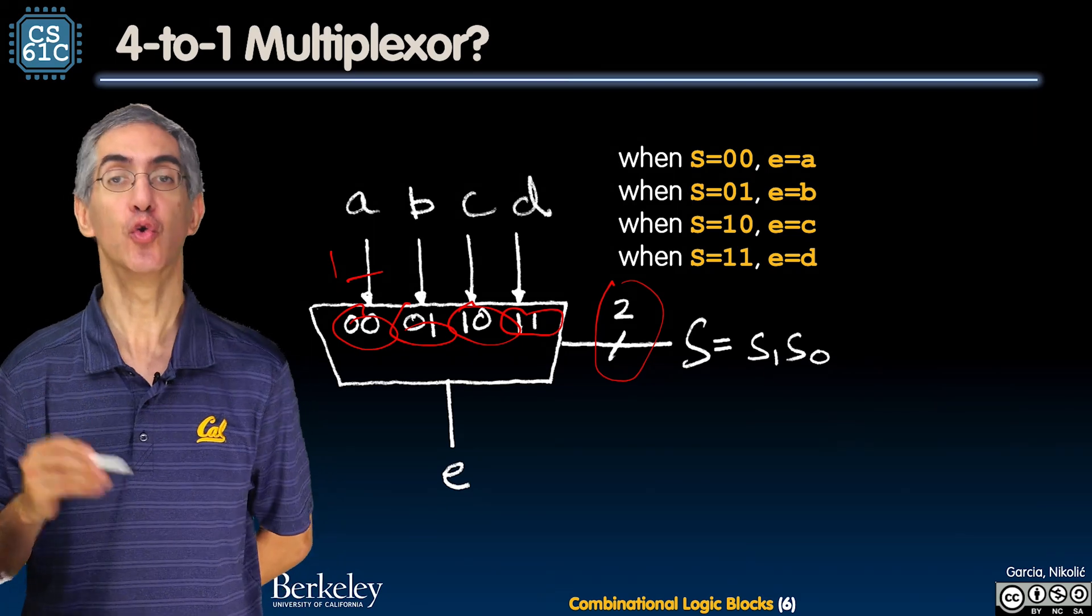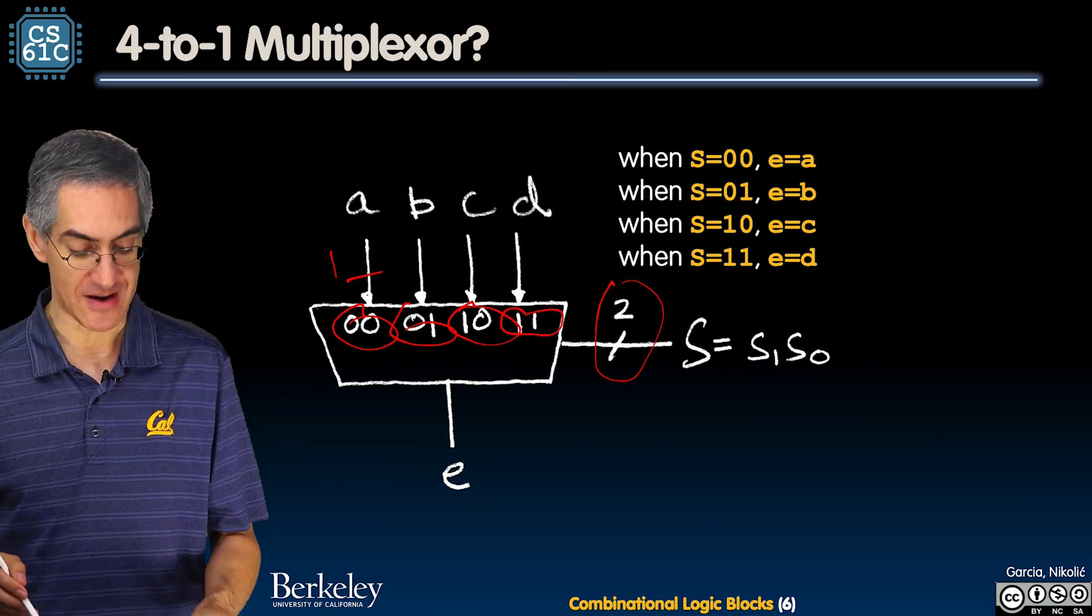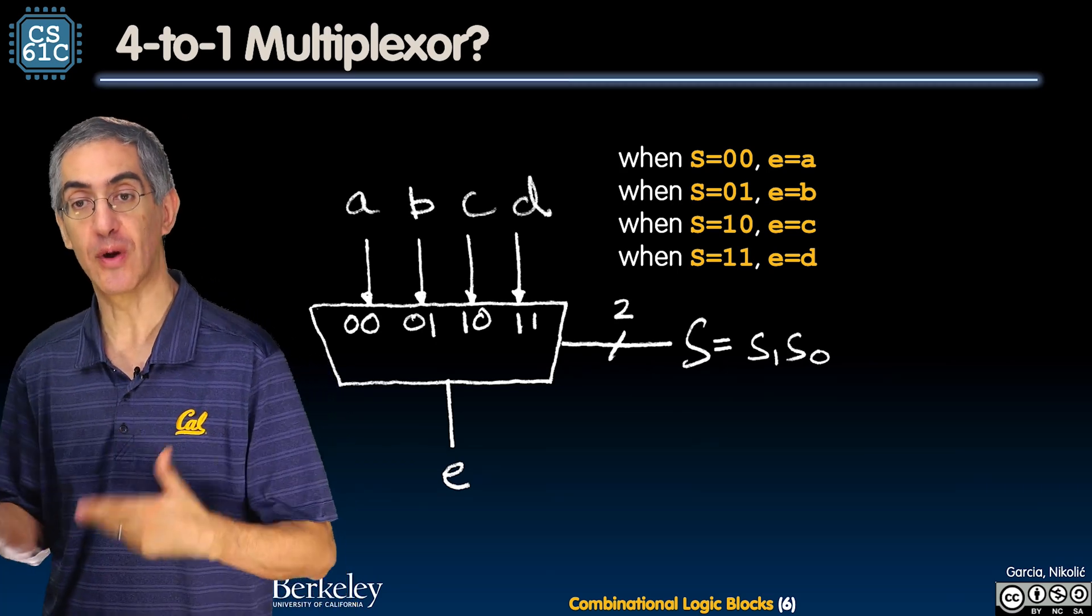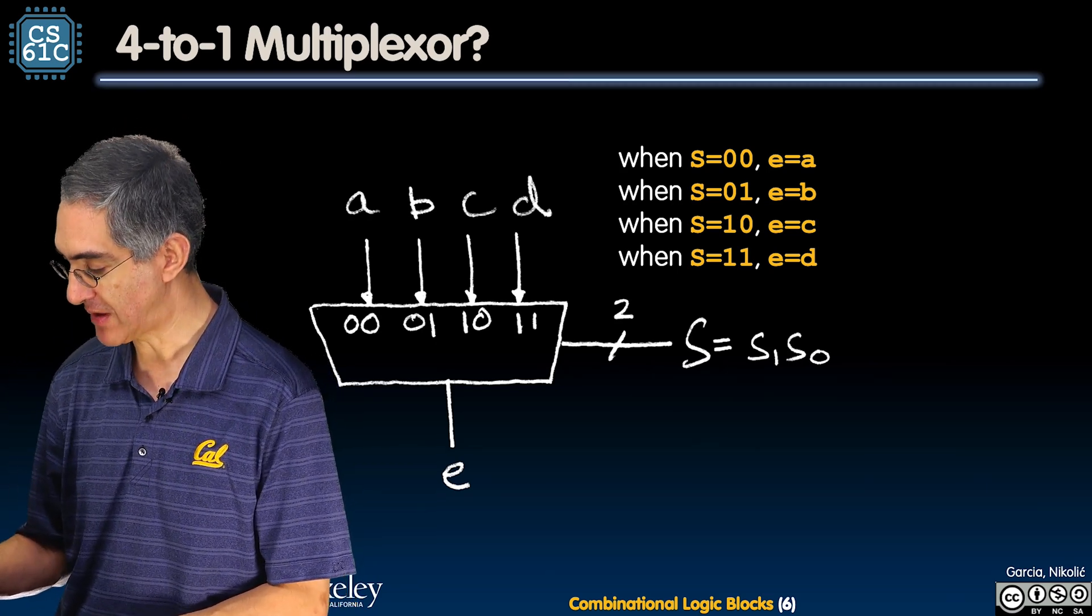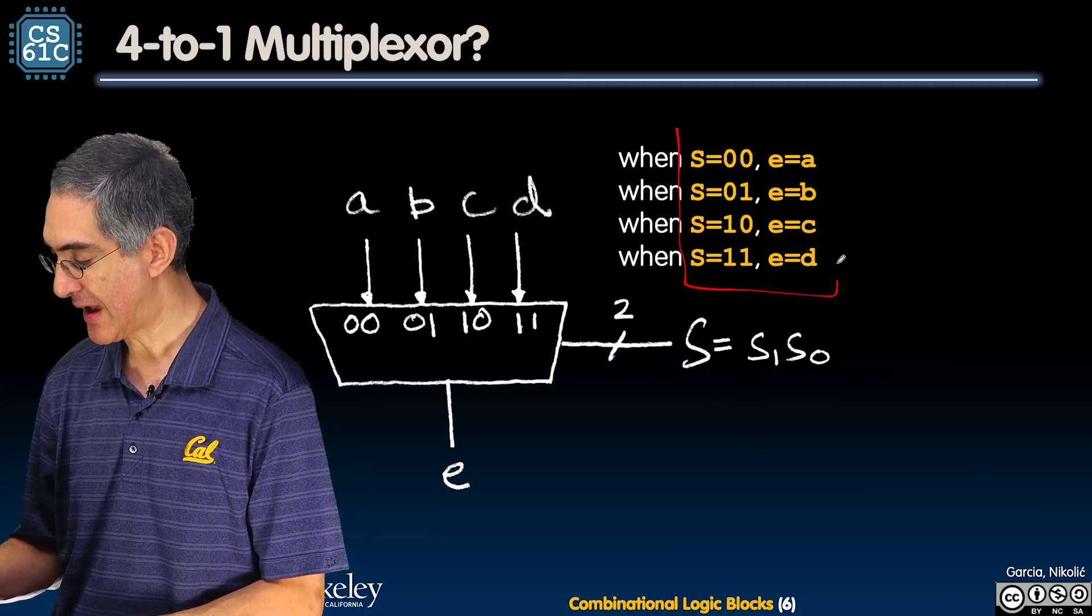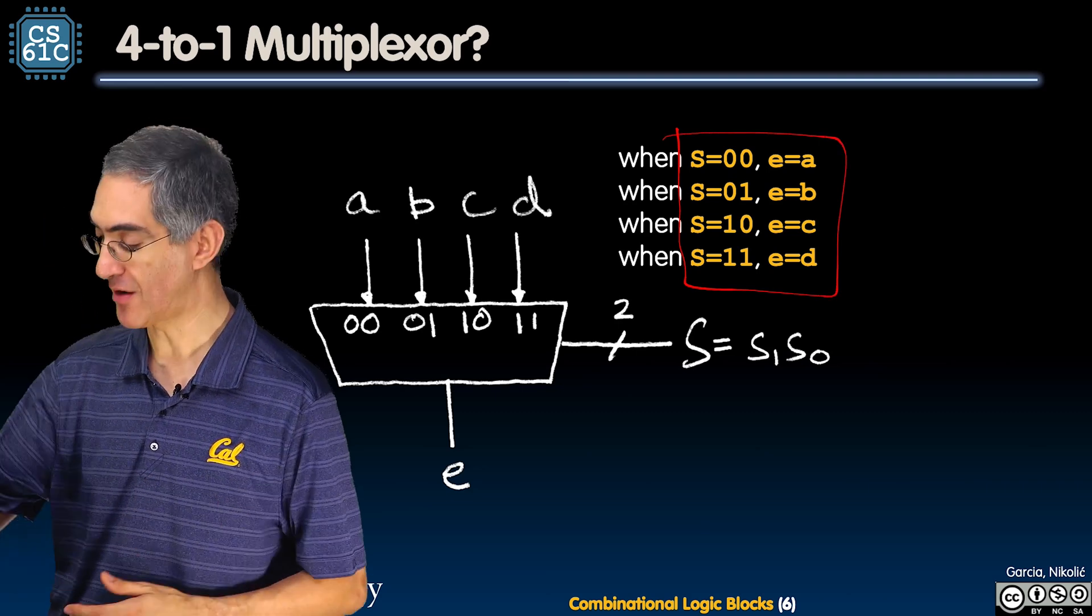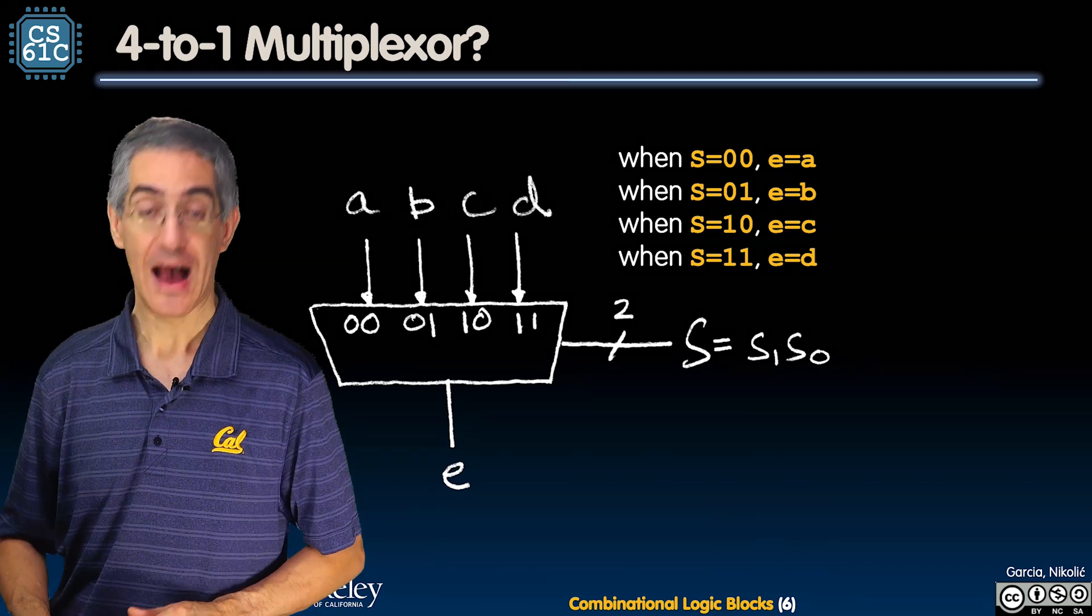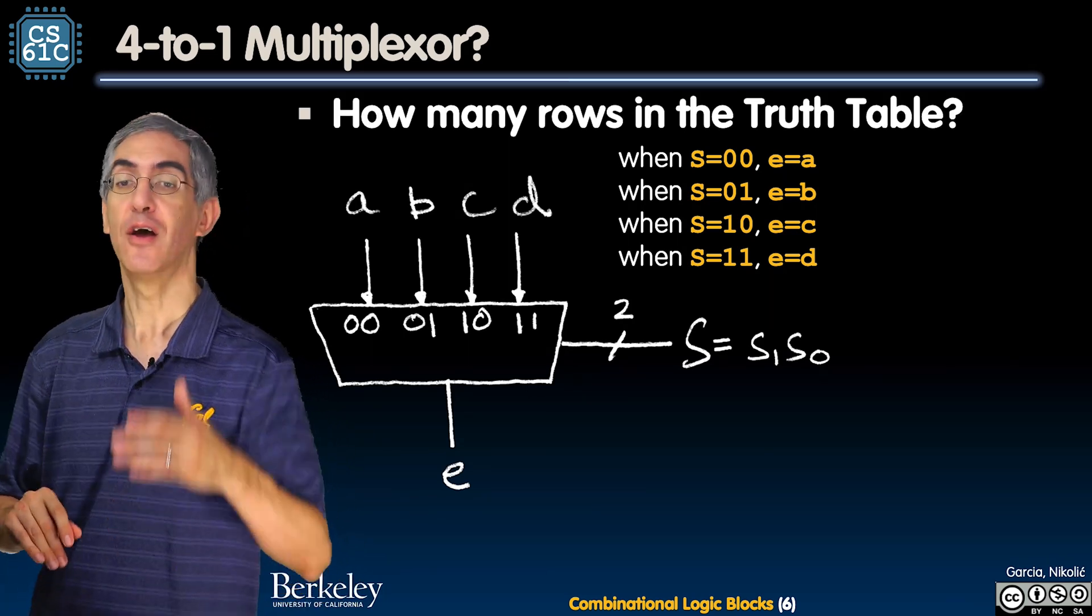You notice I did in the last one as well. I wrote a zero and a one there. Same thing here. So, it's unambiguous who wins. So, if S is one-one, it's going to be D. So, as S has the numbers value zero through three, you know who's going to win. And here's a little table here. E, the output, is going to be A, B, C, or D, depending on whether S has the value zero, one, two, or three, respectively. So, that's nothing special.